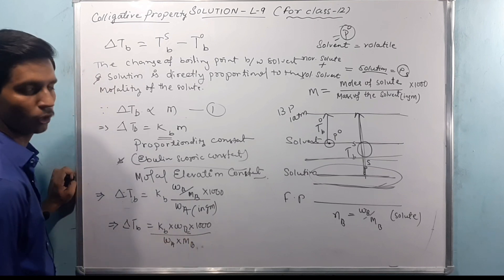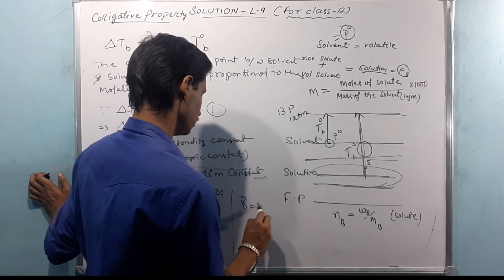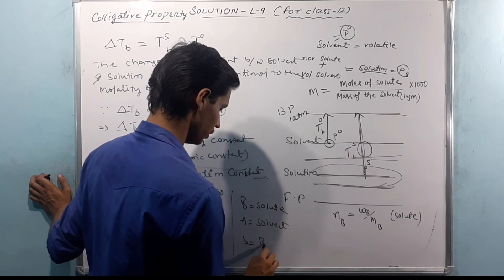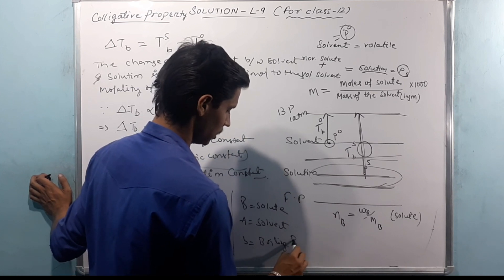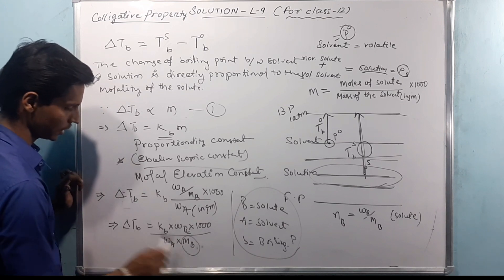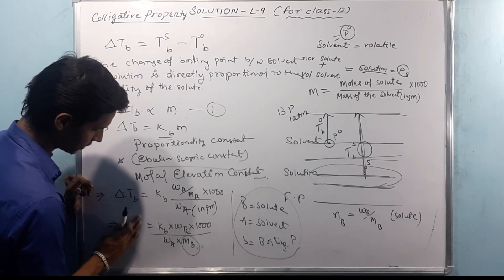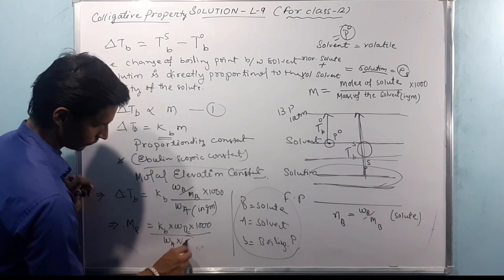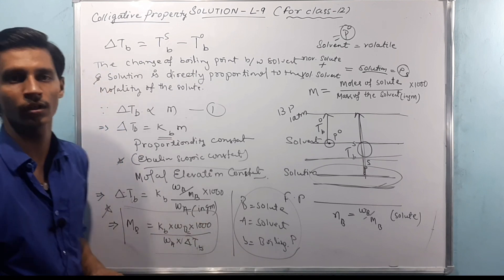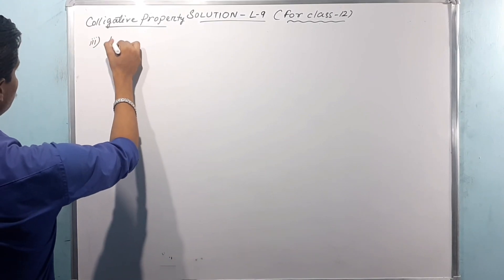So delta T_b equals K_b into w_B into 1000 divided by w_A into M_B, where capital B is the solute and A is the solvent, and small b is the boiling point. From this formula we can find the molar mass of the solute M_B. Next, the third colligative property is Depression of Freezing Point.